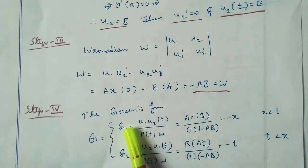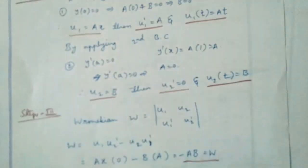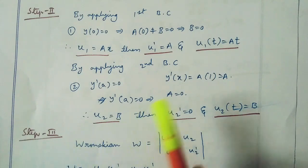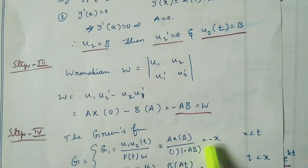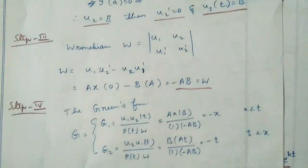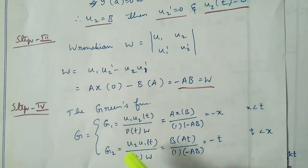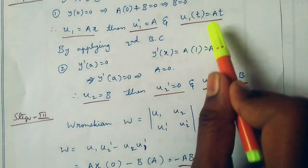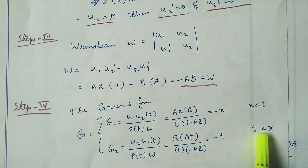Then the Green's function: g1 equal to u1·u2(t) divided by p(t)·W. This equals ax into b, divided by p(t) equal to 1 and W equal to minus ab. This equals minus x for x less than t, since ab cancels. And g2 equal to u2·u1(t) divided by p(t)·W, which equals b into at divided by 1 into minus ab, giving minus t for t less than x.